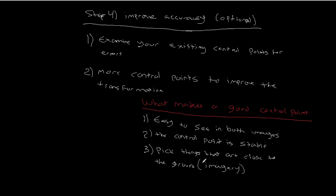So again, what can we do to improve our accuracy if we feel we have to? We can examine our existing control points to make sure we didn't make a mistake. And then we can add more control points, with an emphasis on picking things that we can easily see in both images, that are stable so they're not going to change position from one data set to the next, and that are preferably close to the ground, especially when dealing with imagery. Hopefully this makes sense. As always, if you have any questions, please reach out. Thank you.